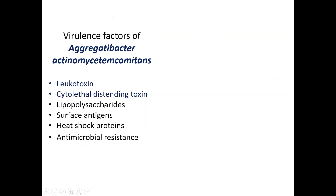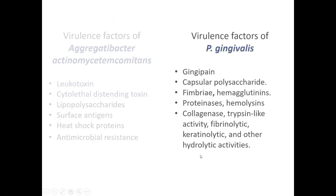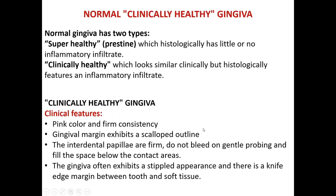Examples of virulence factors include: for Aggregatibacter actinomycetemcomitans — leukotoxin, cytolethal distending toxin, lipopolysaccharide, heat shock protein, and surface gene-oriented microbial resistance. For P. gingivalis — gingipains, capsular polysaccharide, fimbriae, proteinases, hemolysin, collagenase, trypsin-like activity, and hyaluronidase activity.